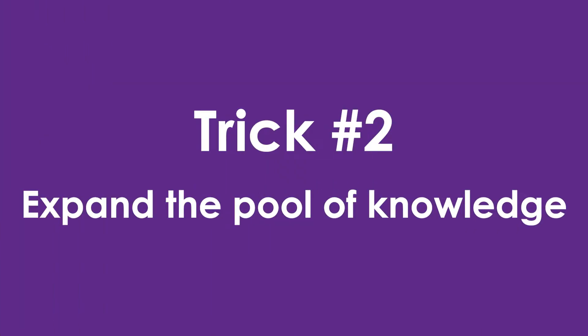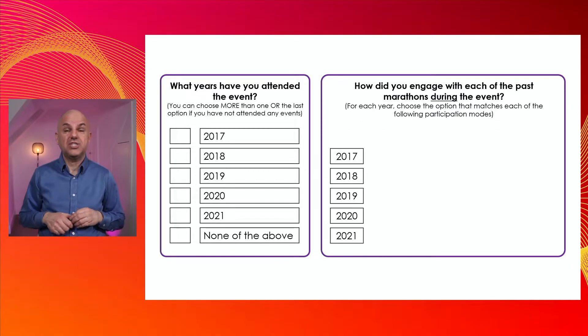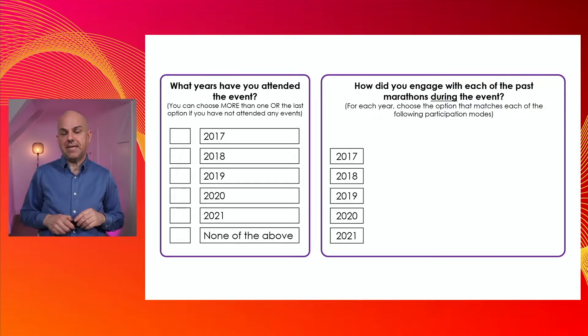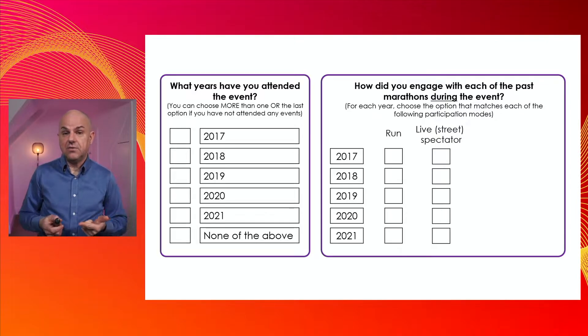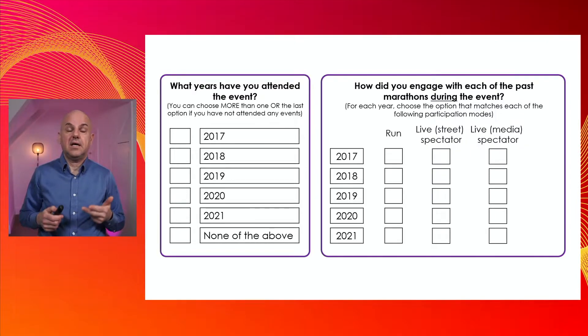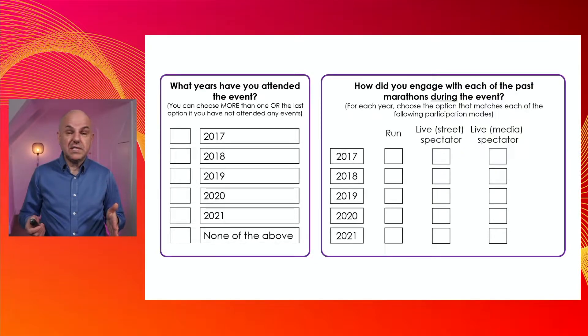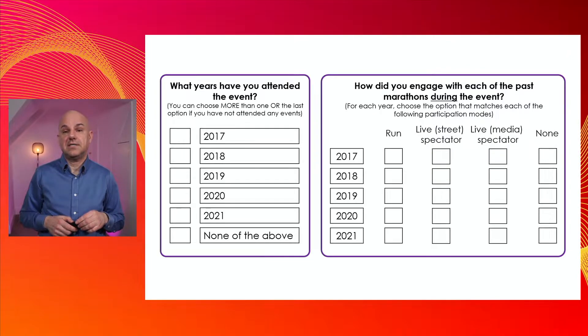The second trick is to make changes to the questions so that you can expand the pool of knowledge. It actually allows you to collect different data about your participant. We can change the question to try to understand how they engaged with each of the past events. There are basically three ways of engaging: you can run at the event, you can be a spectator watching it live, or you can be a spectator through media. And obviously there must also be an option that says none.